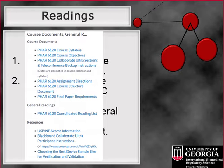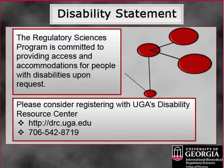The UGA Regulatory Sciences program is committed to providing reasonable access and accommodation for people with disabilities. If you have a disability and require accommodation, please contact me, Jonna Hodges. We have tried to make all of our course content accessible. If, however, you find content that is not accessible and you require things like closed captions or transcripts for lectures or for a live session like a Blackboard Collaborate Ultra session, please contact me early on so I can make the necessary arrangements for a transcription or closed caption service.